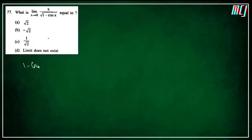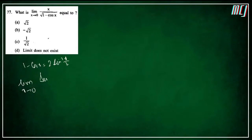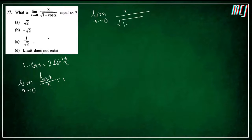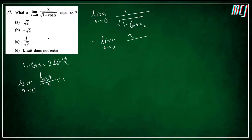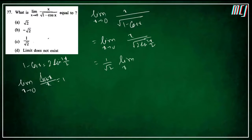Next question: limit x→0 of x / √(1−cosx). Formula याद है: 1−cosx = 2sin²(x/2). Standard limit: limit x→0 of sinx/x = 1. तो यह बन जाएगा: limit x→0 of x / √(2sin²(x/2)) = (1/√2) · limit x→0 of x / sin(x/2).